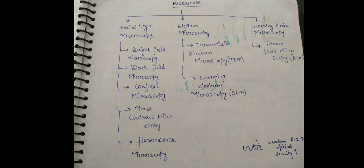In phase contrast microscopy, one ray is out of plane and one ray is in plane — by combining these two rays, an image is formed by changing the phase condition. Next is fluorescence microscopy, which forms an image using fluorescence. Then comes electron microscopy — SEM and TEM — in which the light source is electrons: scanning electron microscopy and transmission electron microscopy. Next, scanning probe microscope includes AFM — atomic force microscopy. All of these are parts of microscopy, and we will complete each topic in separate videos.